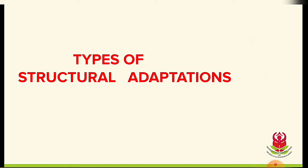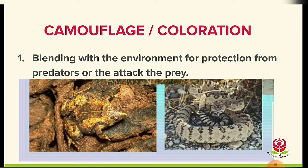The first structural adaptation is camouflage, or coloration. Camouflage is blending with the environment for protection from predators or to attack prey. Predators are animals that live by killing and eating other animals. Prey is an animal eaten by a predator — it is helpless or unable to resist attack. Animals camouflage to disguise their appearance to blend with surroundings, either to hide from predators or to catch prey.